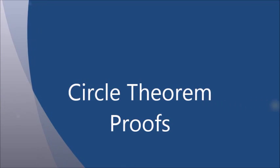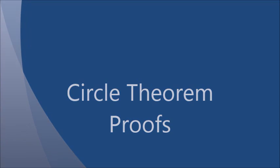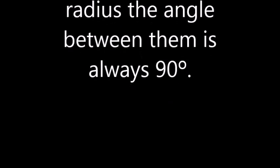Welcome to our circle theorem proofs. We want to prove that where a tangent meets a radius, the angle between them is always 90 degrees. Step 1: We create the problem by drawing a circle and marking its center.